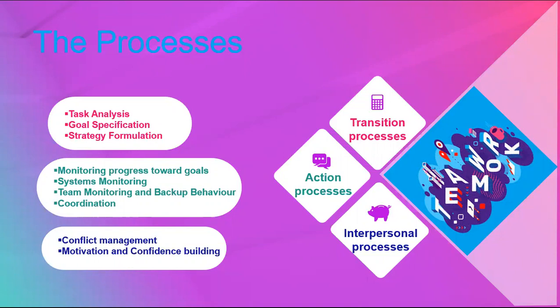For example, if we are a cricket team, the task analysis is that we must first bat and then bowl, and the goal specification is that we need to score more runs than the opponent. In football, the task analysis is that we play on a field with 22 people and one football for 90 minutes, and the goal specification is that we need to score one more goal than the opponent. Strategy formulation is how we are going to accomplish this task — this is the transition process.